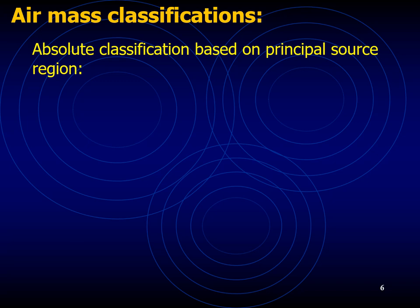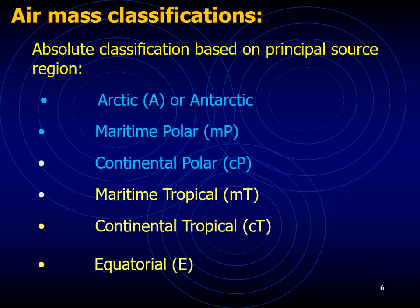Air mass classification based on the principal source region is as follows. Continental polar and continental arctic air masses comprise the bitterly cold weather that invades southern Canada and the United States in winter. These air masses originate over the ice and snow-covered regions of northern Canada and Alaska, where long clear nights allow for strong radiational cooling of the surface. Air in contact with the surface becomes quite cold and stable, and since little moisture is added, it is also quite dry, with specific humidities often less than 0.3 grams per kilogram.